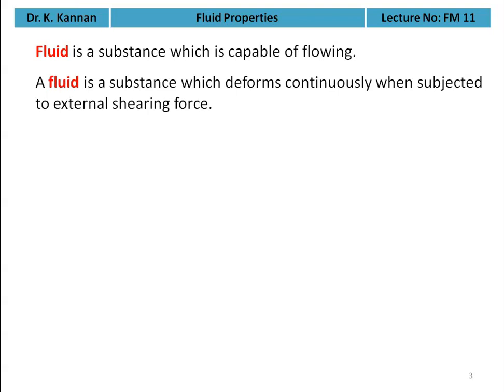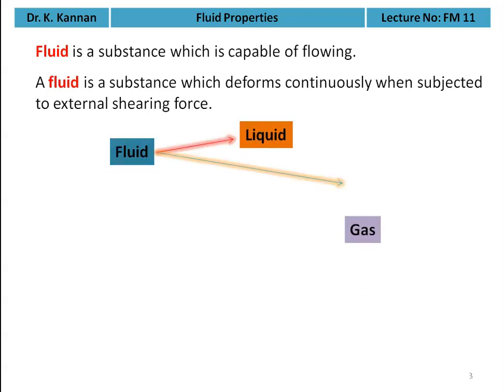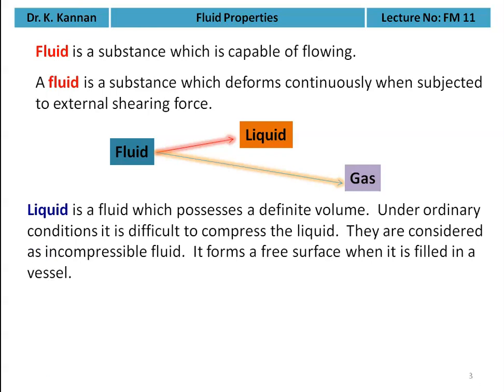We can classify the fluid into two: one is liquid, another one is gas. Liquid is a fluid which possesses a definite volume, and under ordinary conditions it is difficult to compress the liquid — they are considered as incompressible fluid. Water and oil are examples for liquid. They are called incompressible.